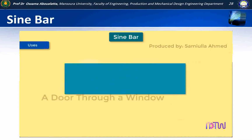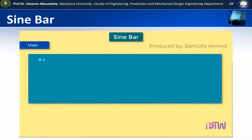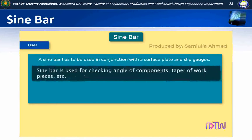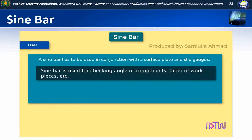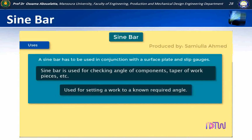Uses of sine bar: A sine bar has to be used in conjunction with a surface plate and slip gauges. It is used for checking the angle of components, taper of workpieces, etc. It is also used for setting a work to a known required angle.